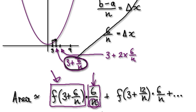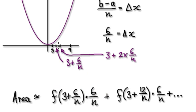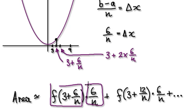Remember, n is a general case — we're splitting it up into n equal pieces. At the moment n is a general case. Later on, we're going to increase n and make n head towards infinity. The height of this triangle here is given by this. And then we times it with delta x, which would then give us the area of the triangle here.